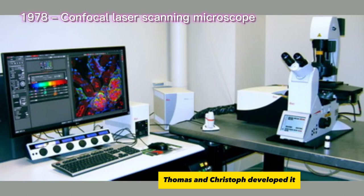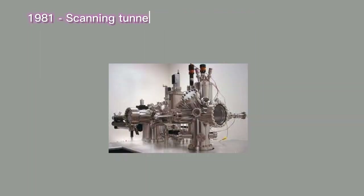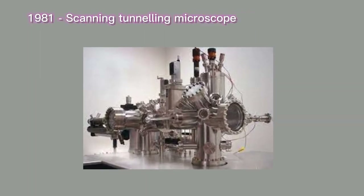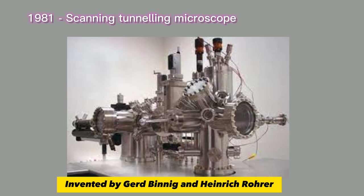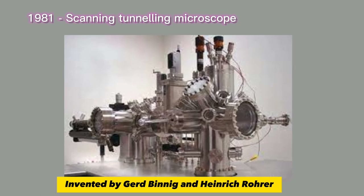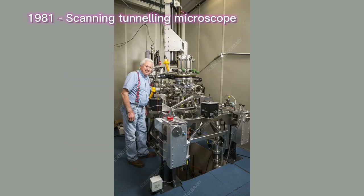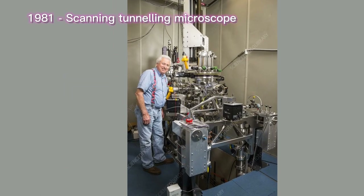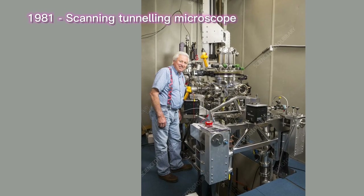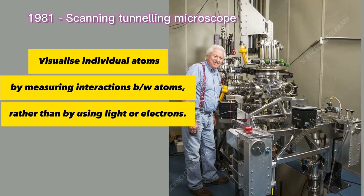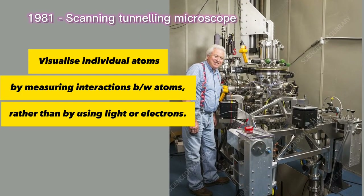Thomas and Christophe developed the confocal laser scanning microscope. In 1981, the scanning tunneling microscope was invented by Gerd Binnig and Heinrich Rohrer. It can visualize individual atoms within materials by measuring interactions between atoms rather than by using light or electrons.